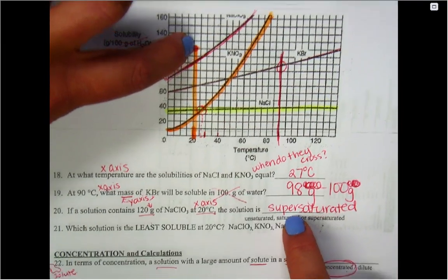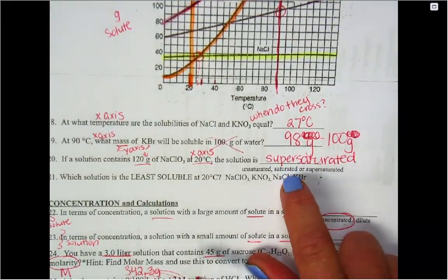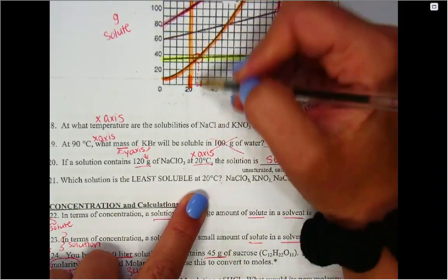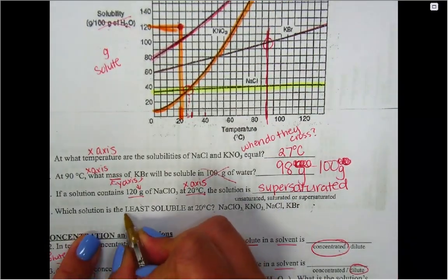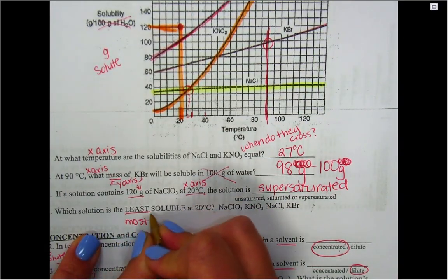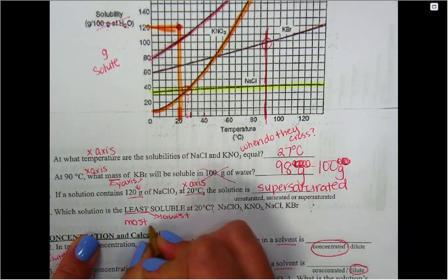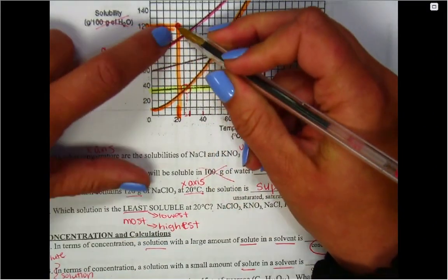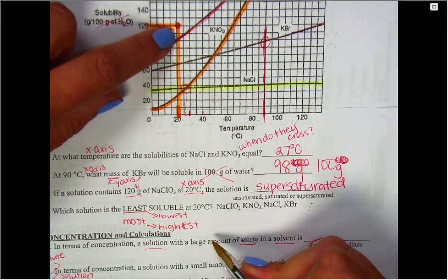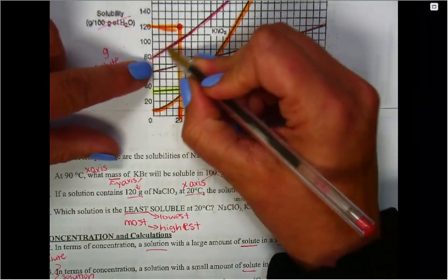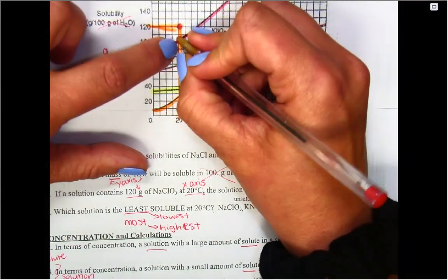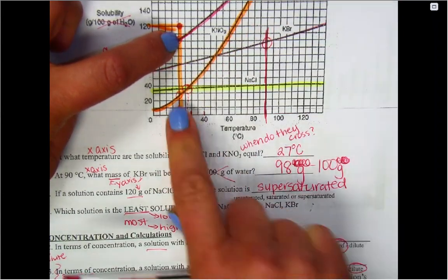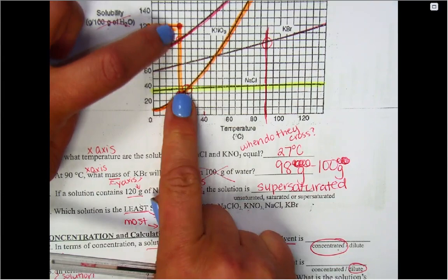The next part says which solution is least soluble at 20 degrees Celsius. We've already marked that line, which will be helpful. When I say least soluble versus most, least means the lowest, most would mean the highest. So I'm going to look at 20 degrees Celsius, I'm going to find each of these lines that they're saying. NaClO3 is this one that curves up, so I will say that hits right here. The next one, KNO3, that's the one that curves down here, hits way down here. So out of these two, this one has the least, so I'm going to cross out that answer choice.